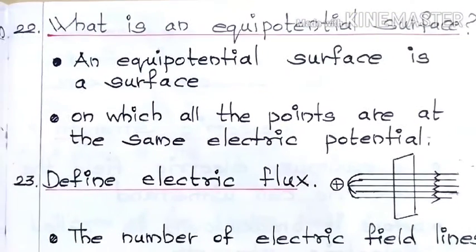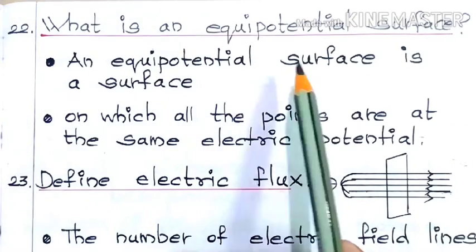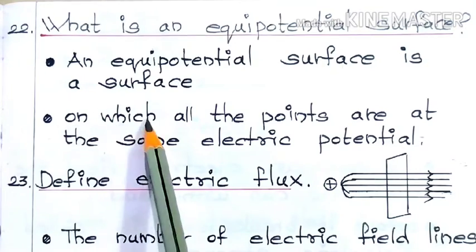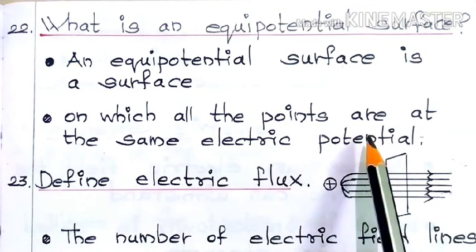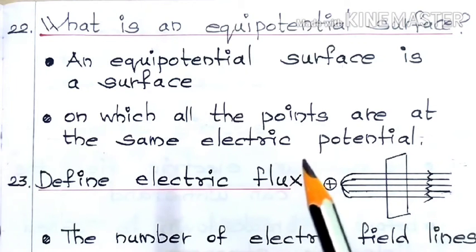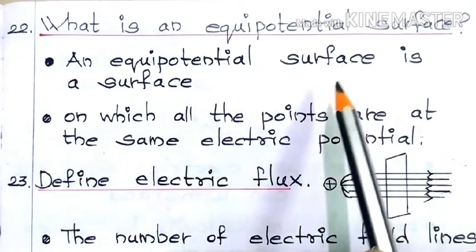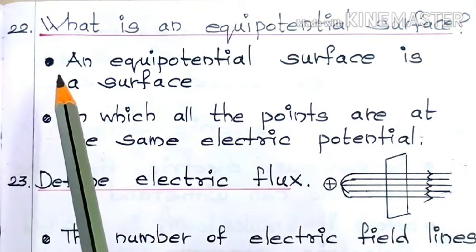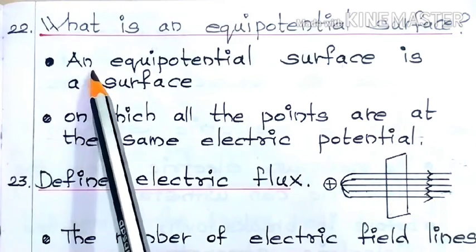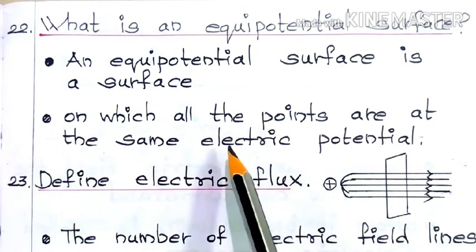Next question: What is an equipotential surface? An equipotential surface is a surface on which all the points are at the same electric potential. If all the points lying on a surface have the same electric potential, then we call that surface an equipotential surface.